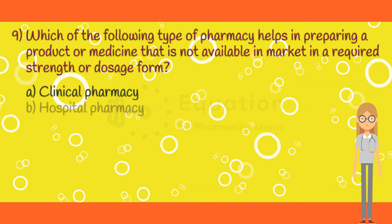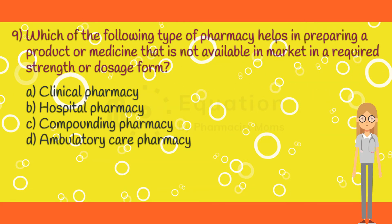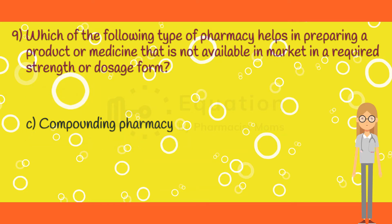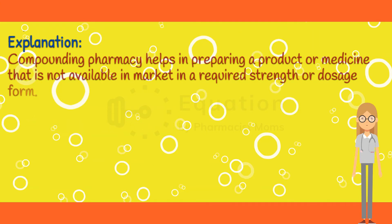Question 9. Which of the following type of pharmacy helps in preparing a product or medicine that is not available in market in a required strength or dosage form? Option A: Clinical pharmacy. Option B: Hospital pharmacy. Option C: Compounding pharmacy. Option D: Ambulatory care pharmacy. The correct answer is option C. Compounding pharmacy helps in preparing a product or medicine that is not available in market in a required strength or dosage form.